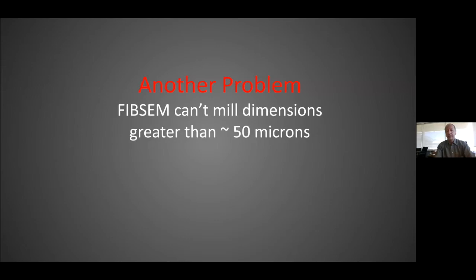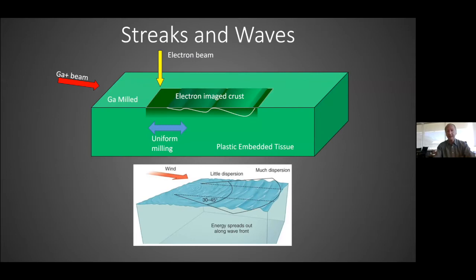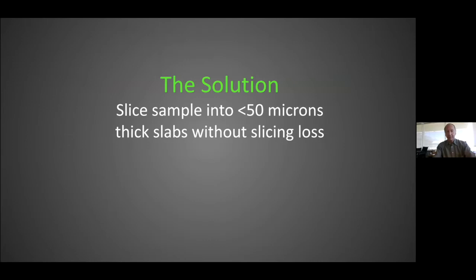But then we ran into another problem. This machine can't mill depths greater than about 50 microns. The ion beam essentially gets a little bit unstable. If you come in with an ion beam, you image it, you make sort of a burnt crust. The cutting gets a little bit unstable as this burnt crust interacts with the milling beam. I like to use the analogy, it's very much like wind coming on a pond. It looks good on the upstream side. But as you get downstream, there are waves and instability and cutting non-uniformities, which get more and more aggressive. So we had a problem again, and thinking hard, if 50 microns is too much, let's keep the samples less than 50 microns.